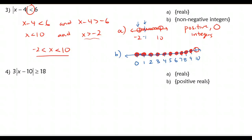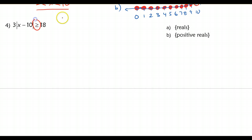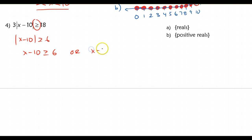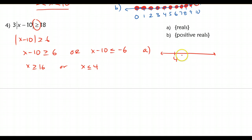For question 4, this is an 'or' — a 'great-or' question. We get the bars by themselves by dividing out the 3, giving absolute value of x minus 10 is greater than or equal to 6. We set up two cases: x minus 10 is greater than or equal to 6, or x minus 10 is less than or equal to negative 6. Solving: either x is greater than or equal to 16, or x is less than or equal to 4. Graphing in all reals, it shoots outward — a standard 'or' problem.